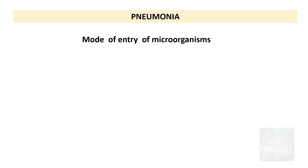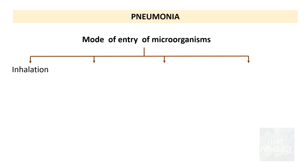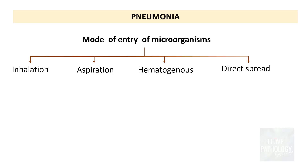How do microorganisms gain entry into the lung parenchyma? There are four different ways. First, via inhalation; second, by aspiration of gastric contents; third, by hematogenous spread through the blood from a distant focus; and fourth, by direct spread from an adjacent focus of inflammation or infection.